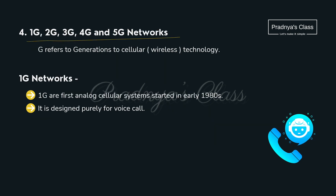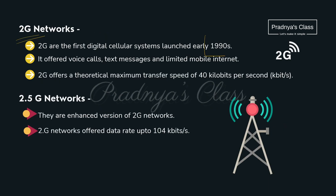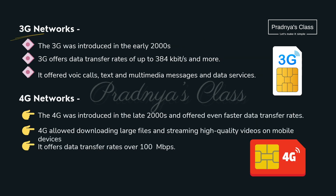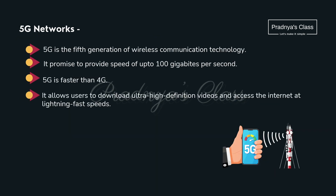Here are the different generations of wireless technology. 1G started around 1980, followed by 2G launched in 1990. Next is 2.5G, the enhanced version of 2G. 3G was introduced in 2000, then 4G in the late 2000s, which provides faster data rates and lets you stream high quality videos on mobile devices. The latest is 5G — the fifth generation of wireless communication technology — providing speed of almost 100 gigabytes per second, letting you download ultra high definition videos and access the internet at lightning fast speed.